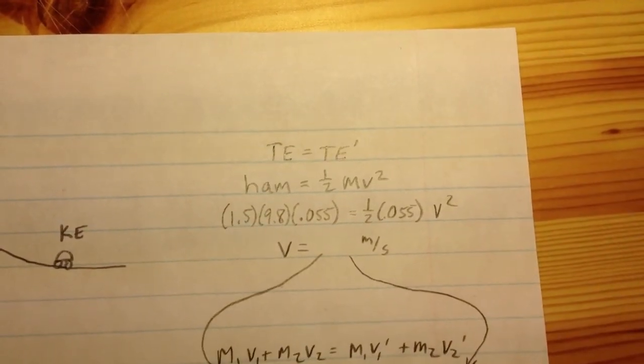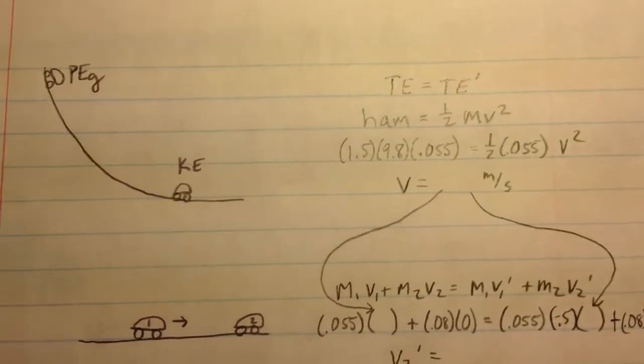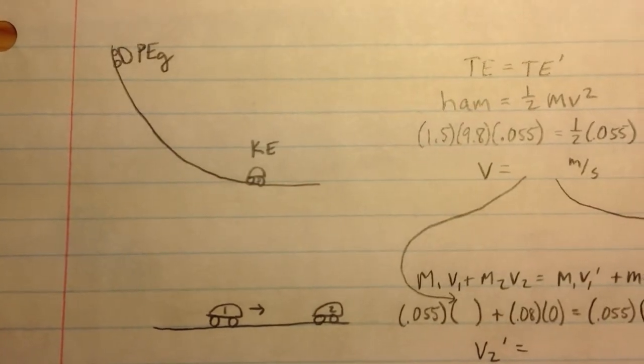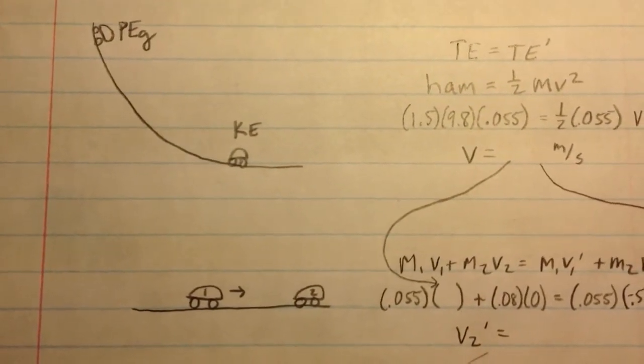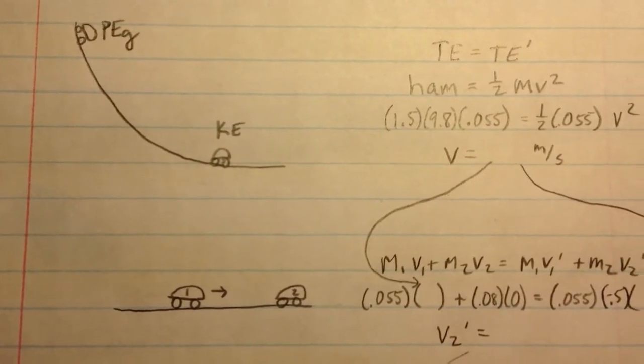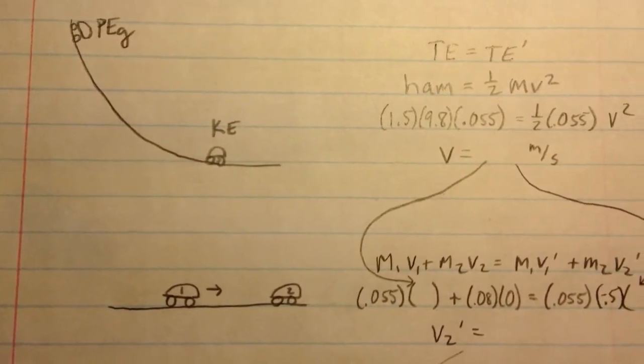Okay, once you have that speed, you're going to need it for the collision part that comes next. So car 1 is going to collide with car 2. You take the speed at the bottom for car 1. Speed of car 2 is 0 before the collision.